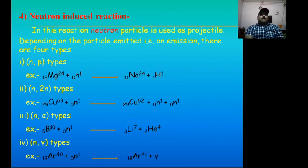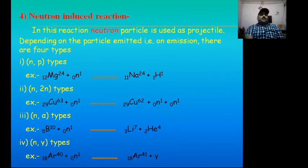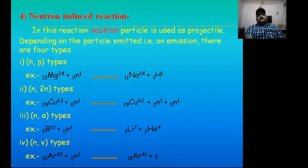Example of neutron-proton type: Magnesium plus neutron gives Sodium-24 and proton. Example of neutron-gamma ray type: Argon-40 plus neutron gives Argon-41 and gamma rays. Dear students, in nuclear reactions, the total atomic and mass number — that is, of protons and neutrons — must balance on both sides, similar to how in chemical reactions the total number of atoms of respective elements is balanced on both sides.